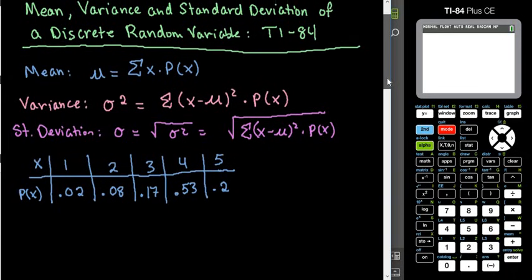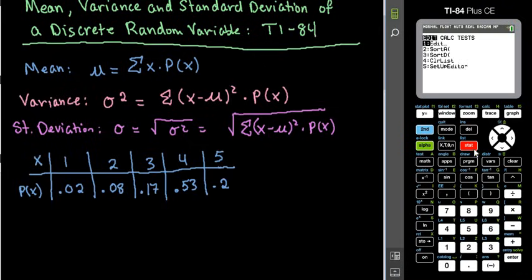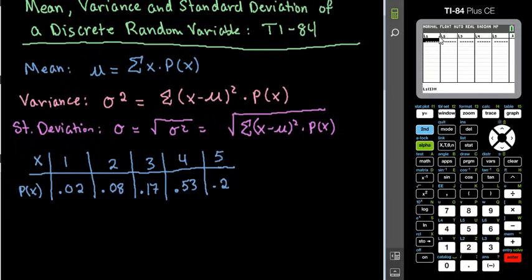So for this, what we are going to do is we are going to take our data set and we are going to put our x values into L1. So remember to do that, we hit stat and edit. I don't have any information in there. Remember, if you did, you would just hit the clear button when you're highlighted at the top. So I would plug in my values, the 1, 2, 3, 4, and 5.